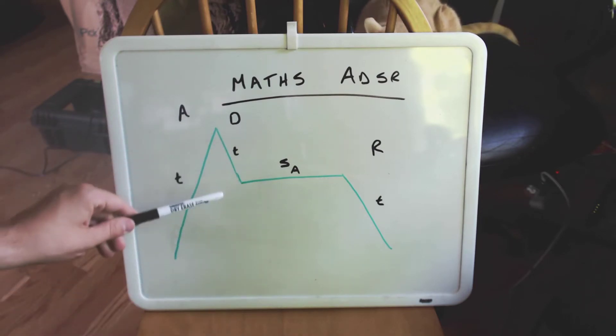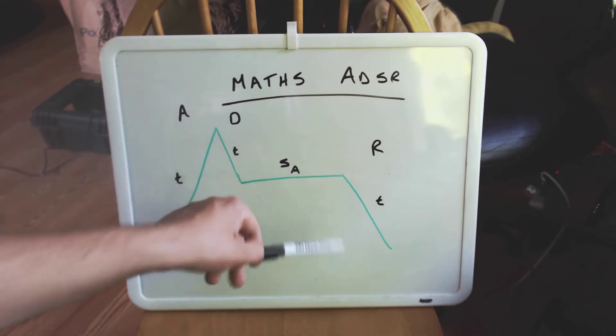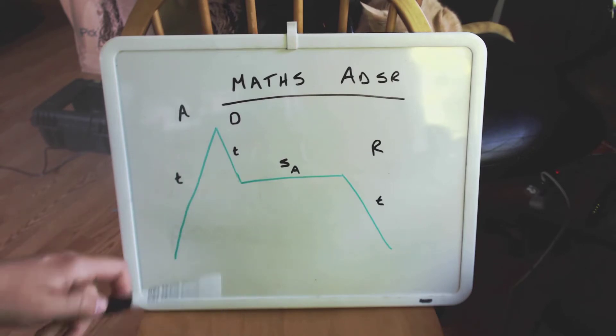For sustain, we're adjusting the amplitude, or how loud the sustain note will be. And then for release, we're adjusting the release time. So a longer release time will be useful for pads, a shorter release time will be useful for short, plucky sounds.